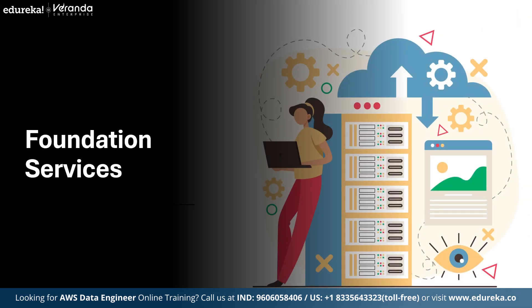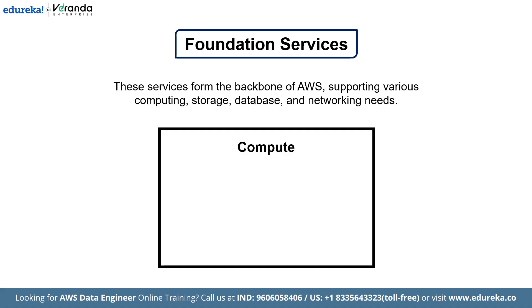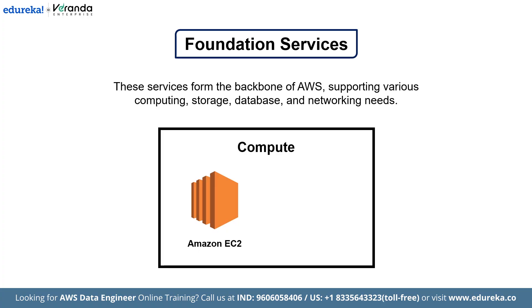Finally, let's explore the foundation services that form the backbone of AWS, supporting various computing, storage, database and networking needs. Let's explore compute services that provide the backbone for running applications and processing workloads. First we have Amazon EC2, which stands for Elastic Compute Cloud. Amazon EC2 provides scalable computing capacity in the AWS cloud. It allows you to run virtual servers and manage them as needed. Next, AWS Lambda lets you run code without provisioning or managing servers — you pay only for the compute time you consume.